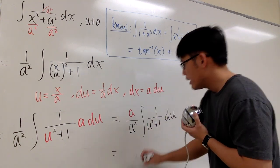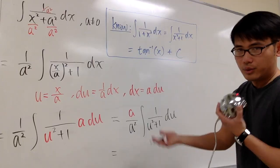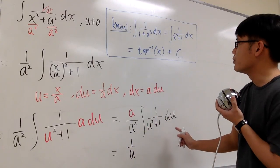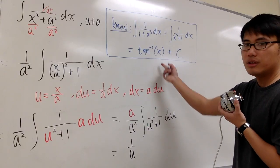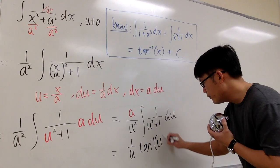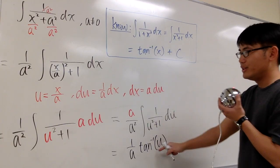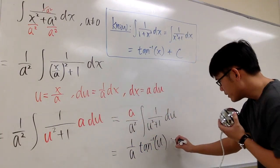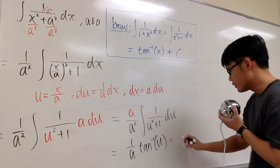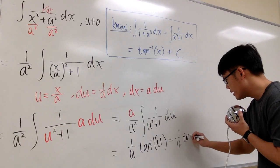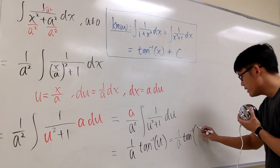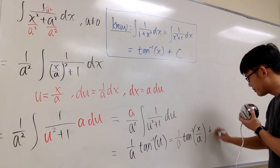And now what? a over a squared, of course, we can simplify that to be 1 over a. And this is something that we can do, which is the inverse tangent of u. So we know this is going to be the inverse tangent of u. But what's u? u is equal to x over a. So finally, we know the formula for that will be just 1 over a times the inverse tangent. u is x over a, and we are done. So plus c.